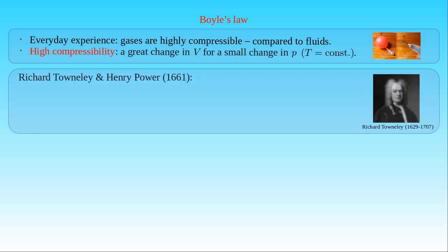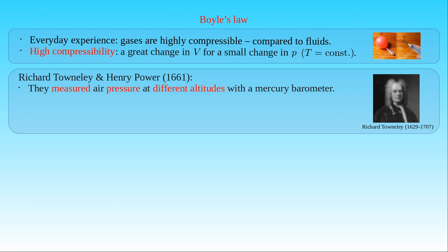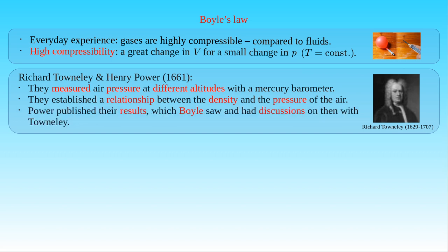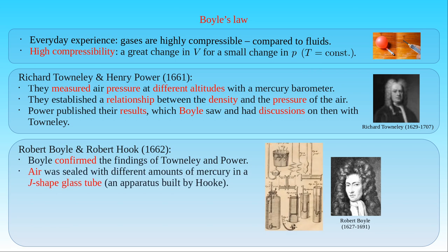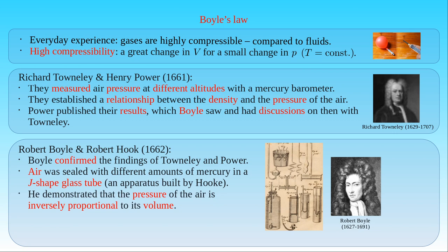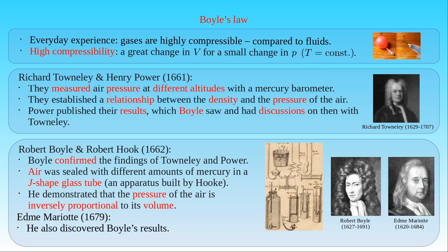Historically, Richard Townley and Henry Power were the first researchers in 1661 who tried to establish the barometric formula. They measured the air pressure at different altitudes along a hillside using a Torricelli-type barometer, and were able to establish a relationship between the pressure and the density of air. Power published the results of their measurement in his book Experimental Philosophy. Boyle saw the early draft of the book and had discussions with Townley. In the following year, Robert Boyle and Robert Hooke carried out a series of experiments related to the measurements made by Townley and Power. Boyle confirmed their findings. Hooke built experimental apparatus including a J-shaped glass tube immersed in a water bath, in which air was sealed with different amounts of mercury. Boyle demonstrated with this device that the pressure of the air is inversely proportional to its volume. However, in 1679, Edme Mariotte independently discovered Boyle's results, and also showed that the volume of a gas changes with its temperature.